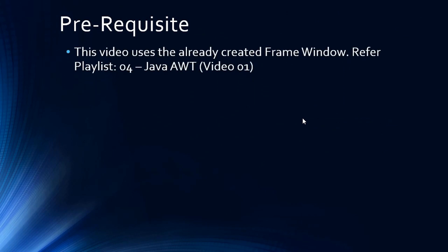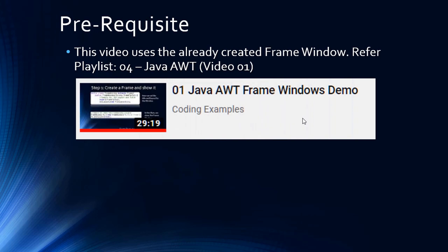As usual, we assume that the AWT frame window was already created. If you want to know how to create an AWT frame window, you can watch the video from playlist number 0 for Java AWT.